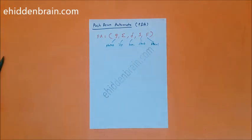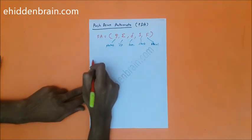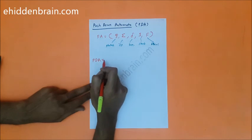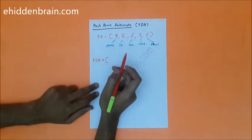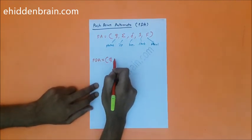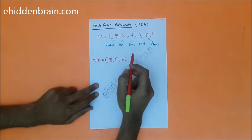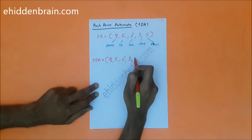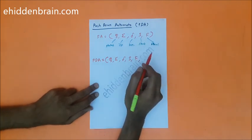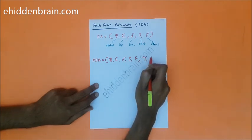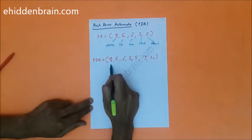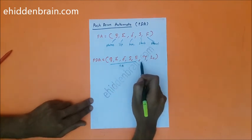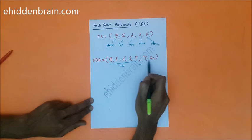Similarly, we can define PDA. Pushdown automata is not a five-tuple — it is a seven-tuple machine. It includes the same components as finite automata: set of states, input alphabets, transition function, start state, and set of final states, plus two more things.